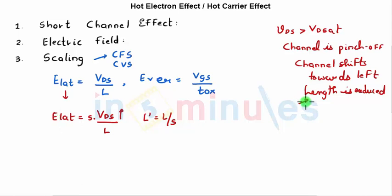Technically, as VDS is increasing, length is getting reduced, so the factor might get even out. But because the length is scaled down by a factor of S, E lateral still increases, and VDS is kept constant, it's not scaled down.